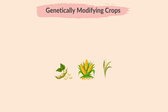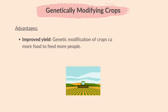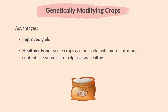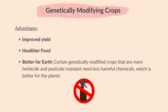Let's discuss the advantages and disadvantages of genetically modifying crops including soya, maize and rice. The advantages are: Improved yield — genetic modification of crops can make them produce more food to feed more people. Healthier food — some crops can be made with more nutritional content like vitamins to help us stay healthy. Better for earth — certain genetically modified crops that are more herbicide and pesticide resistant need less harmful chemicals, which is better for the planet.